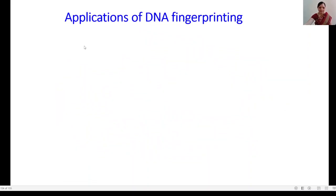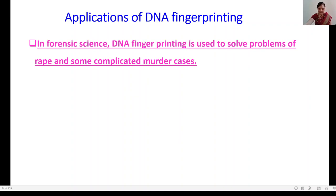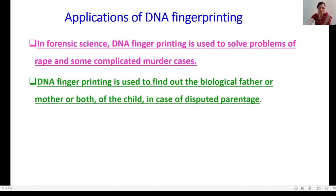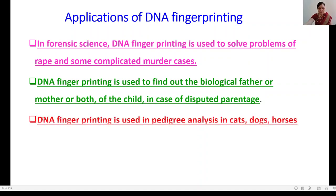The applications of DNA fingerprinting include: in forensic science, it is used to solve rape and complicated murder cases; it is used to find the biological father or mother of a child in cases of disputed parentage; and it is used in pedigree analysis in cats, dogs, horses, and humans. In this way, we have learned about DNA fingerprinting, the steps involved, and its applications.